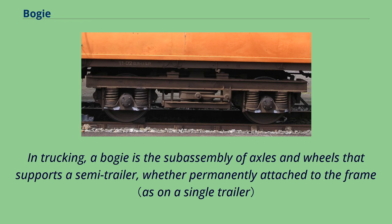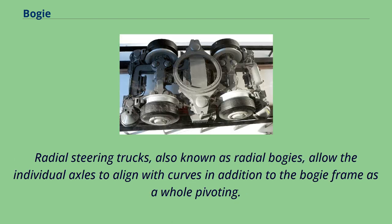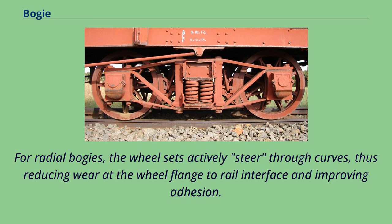In trucking, a bogey is the subassembly of axles and wheels that supports a semi-trailer, whether permanently attached to the frame or making up the dolly that can be hitched and unhitched as needed when connecting a second or third semi-trailer. Radial steering trucks, also known as radial bogeys, allow the individual axles to align with curves in addition to the bogey frame as a whole pivoting. For non-radial bogeys, the more axles in the assembly the more difficulty it has negotiating curves due to wheel flange to rail friction. For radial bogeys, the wheel sets actively steer through curves, reducing wear at the wheel flange to rail interface and improving adhesion.